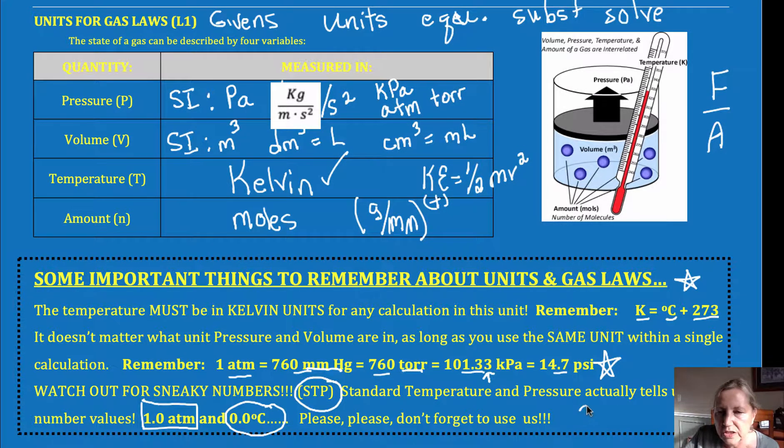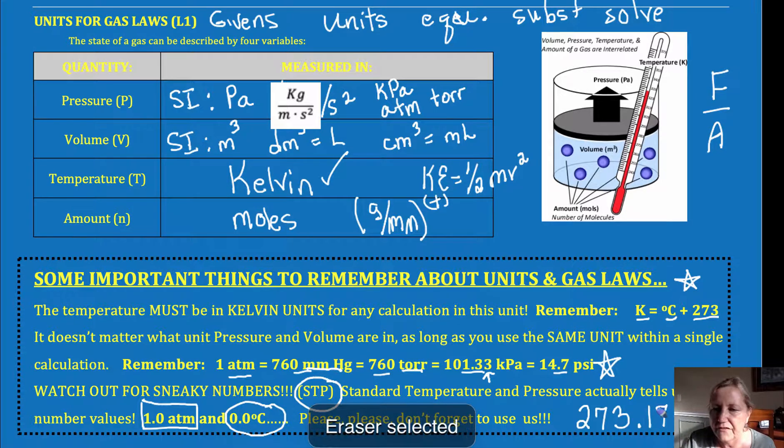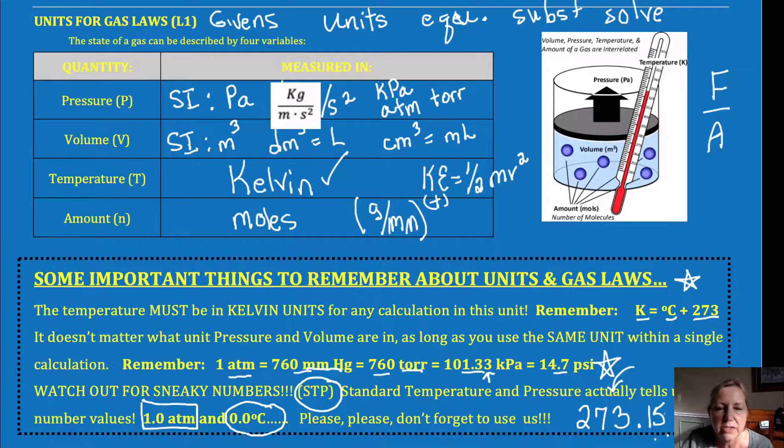Since we're not going to do any math with 0 degrees Celsius, you might want to memorize that standard temperature is 273.15 Kelvin. I'll tell you what I do. If my Celsius temperature ends at the ones place, I just use 273. If it goes to the tenths or the hundredths, I use the 0.15. Typically, with most of your math and your answers, you'll be close enough if you just go with the plus 273.